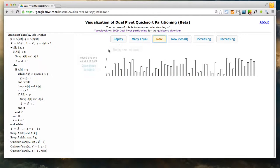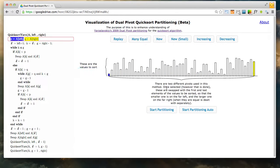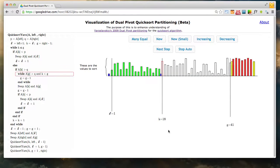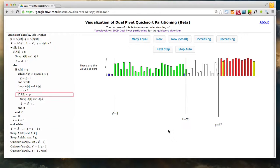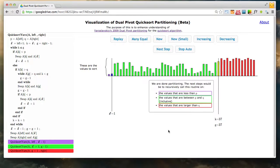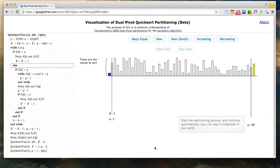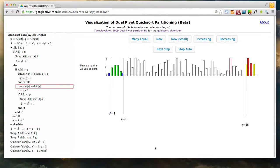I'm watching the pointers. Sedgwick talks a lot about the crossing pointers technique, and this shows it right there. They just crossed. It does some swaps at the end. I'm going to watch it again. When I click new, it's picking random values.